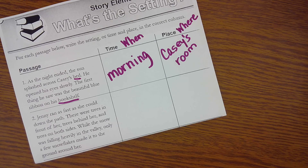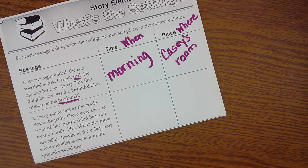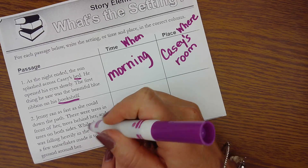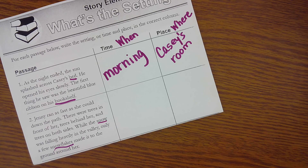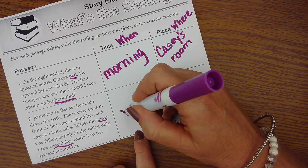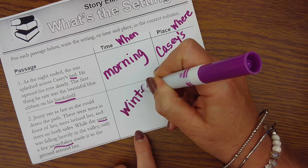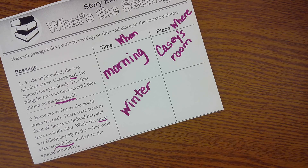Once again, the author is not telling us exactly when and where this story is taking place — we need to look for clues. When I'm thinking about the when, this doesn't give me clues about a morning or evening or lunchtime, but I hear a clue about when as in a season or time of year. I see clues of snow and snowflakes, and I'm thinking this is happening in the winter. I still don't know specifically if it's morning or afternoon, but I know it's a winter season.